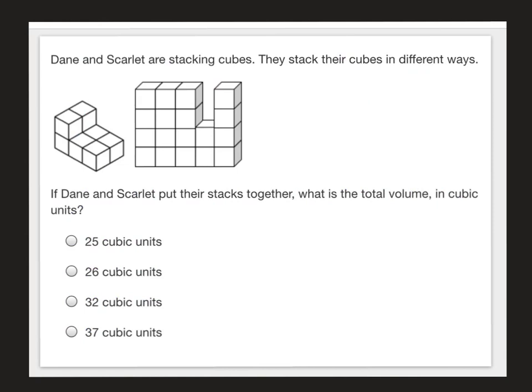This next question says Dane and Scarlett are stacking cubes in different ways. If they put their stacks together, what's the total volume? So we need to count each one, figure out how much each one has, and then add those volumes together. We've got to know if there's one cube here and one cube here, there's got to be one underneath them. So that would be one, two, three, four, five, six, seven, eight. So this figure has a volume of eight cubes.